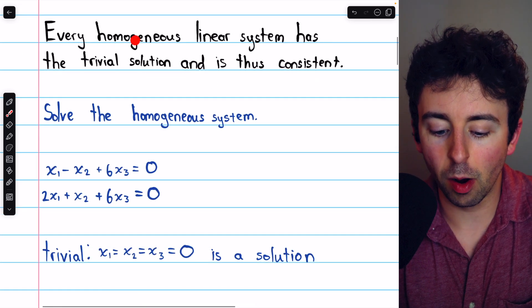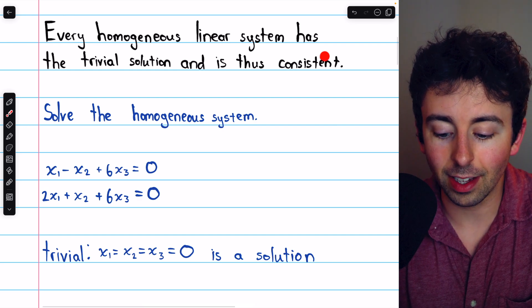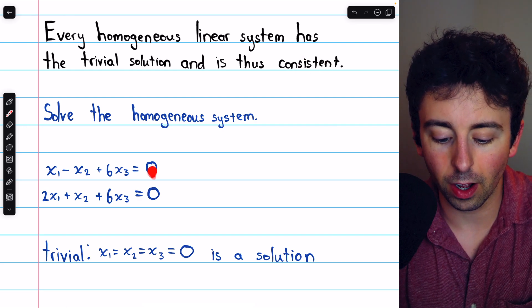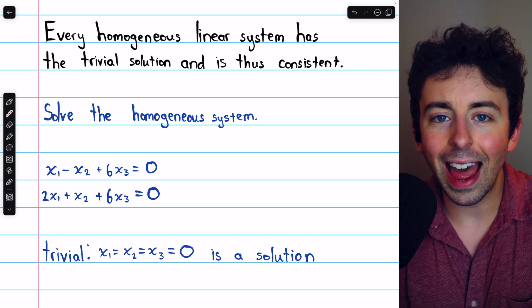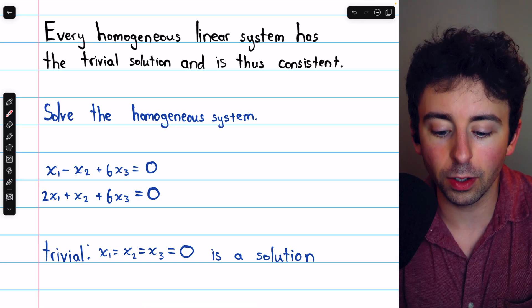As a result, every homogeneous linear system is consistent, because every system like this where the constants are zero will have this so-called trivial solution.